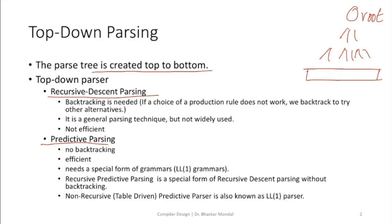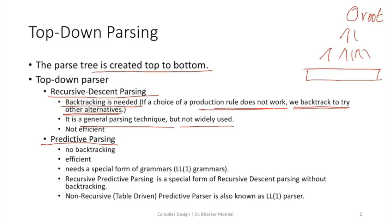In recursive descent parsing, backtracking is needed. If a production rule does not work, we backtrack to try other alternatives. In recursive descent, we choose a rule to go forward, and if we find an error or it leads to some halt, we backtrack to try other alternative production rules. It is a general parsing technique but not widely used for compilers or programming languages.